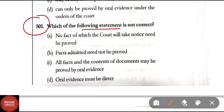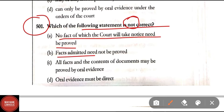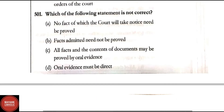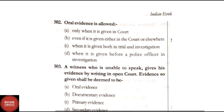Question 501: Which of the following statement is not correct? Option A: No fact of which court will take judicial notice need to be proved. Option B: Facts admitted need not to be proved. Option C: All facts and the contents of the documents may be proved by oral evidence. Option D: Oral evidence must be direct. Option C is not correct — all facts and contents of documents may be proved by oral evidence is incorrect — therefore it is the right answer.